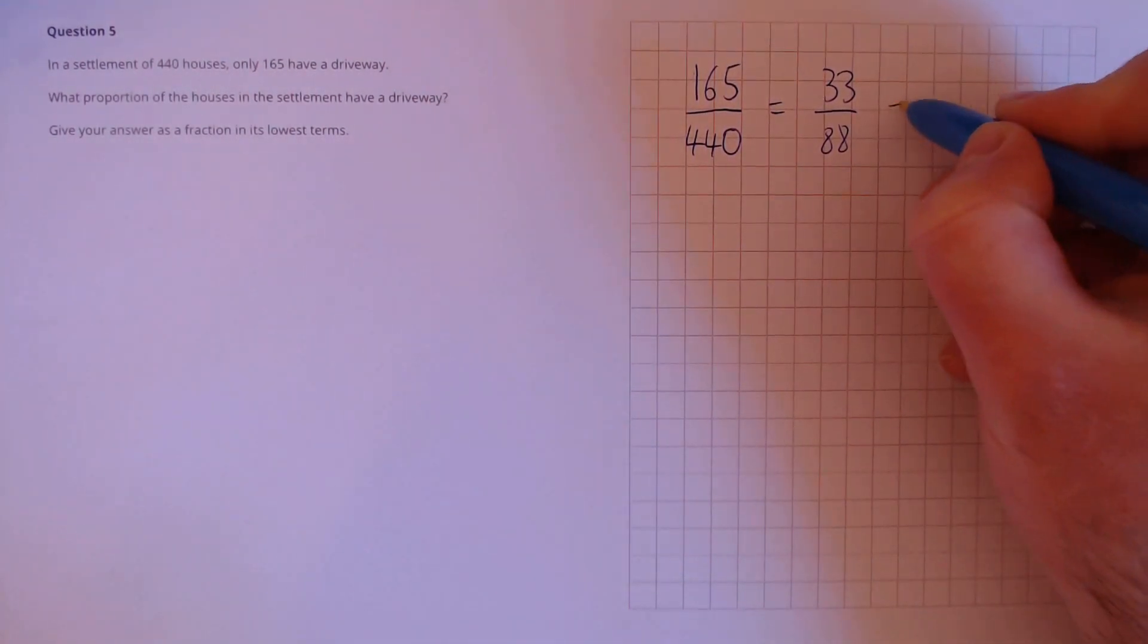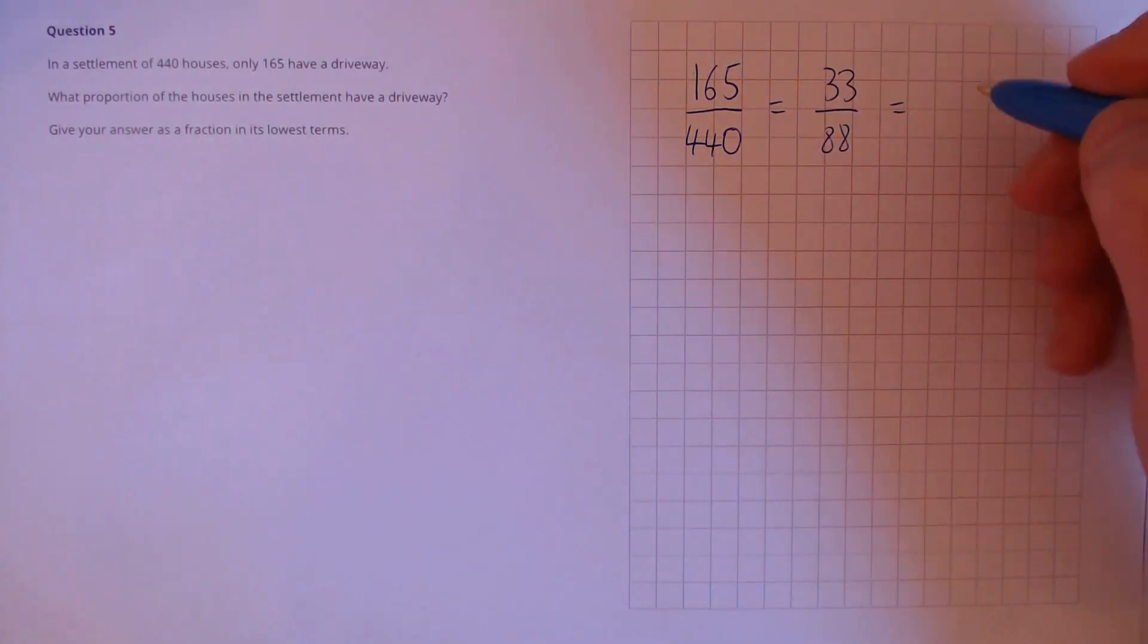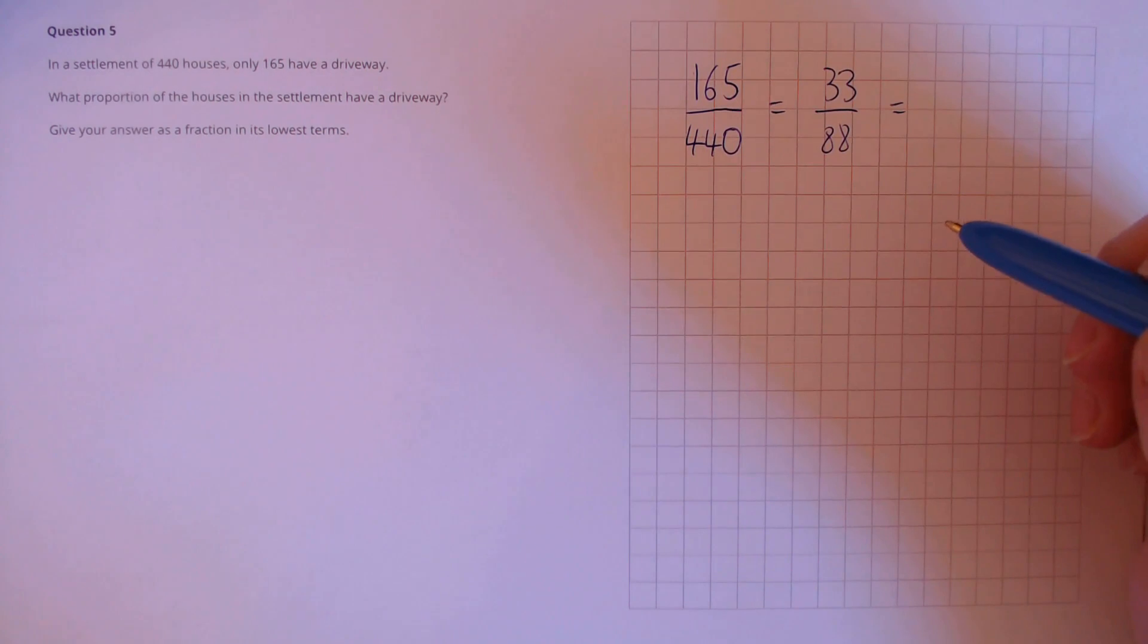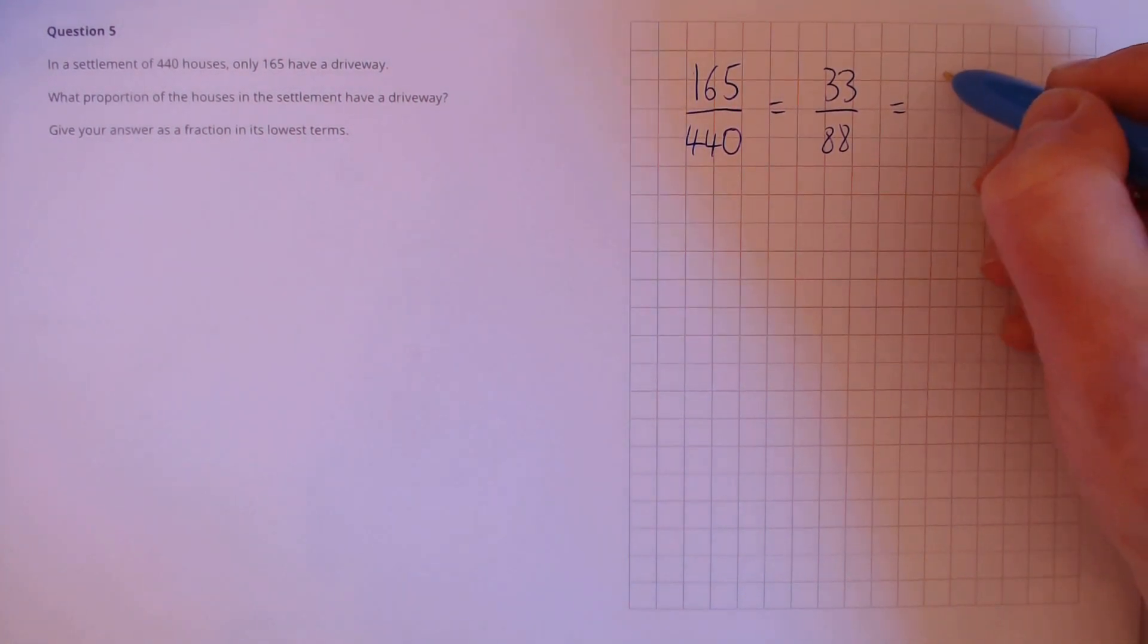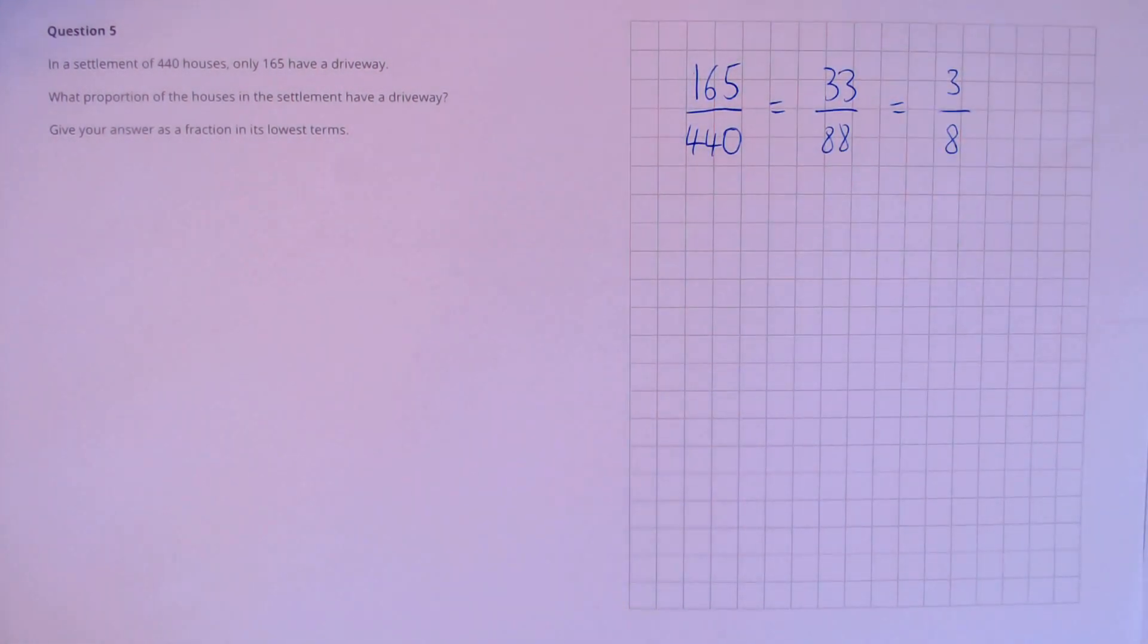The next simplification we can do is divide by 11. We see that 33 and 88 can both be divided by 11. So let's do 33 divided by 11, that's 3, and 88 divided by 11, that's 8. So our answer is 3 divided by 8.